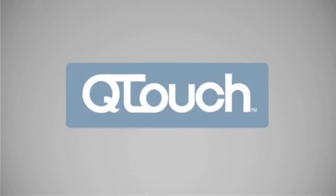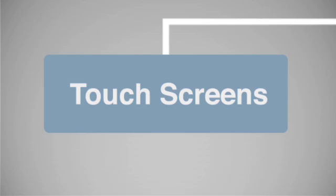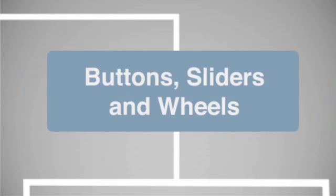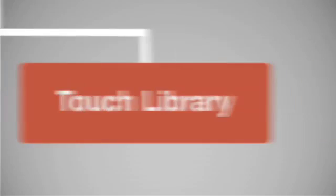Let's summarize Atmel's current Q-Touch product portfolio. To the left you find the touchscreen products. Touchscreens are controlled by customized Q-Touch solutions where Atmel assists in the design. Touch buttons, sliders or wheels on the right are implemented using either fixed function devices or the touch library. Fixed function devices are external devices dedicated to touch sensor functionality that report touches and positions through serial interfaces to an application controller. Finally, with the Atmel Touch Library you get the opportunity to integrate leading-edge touch functionality into your own code yourself.